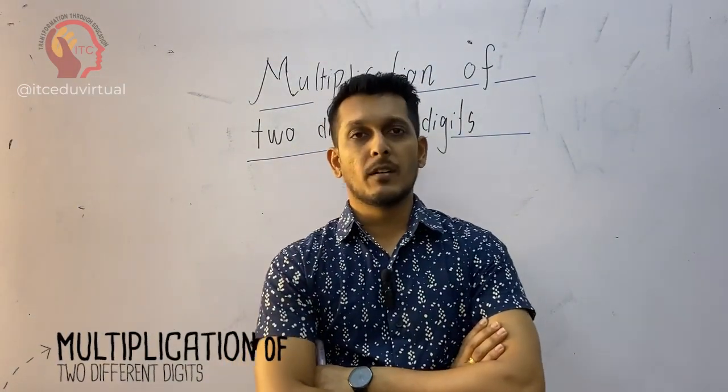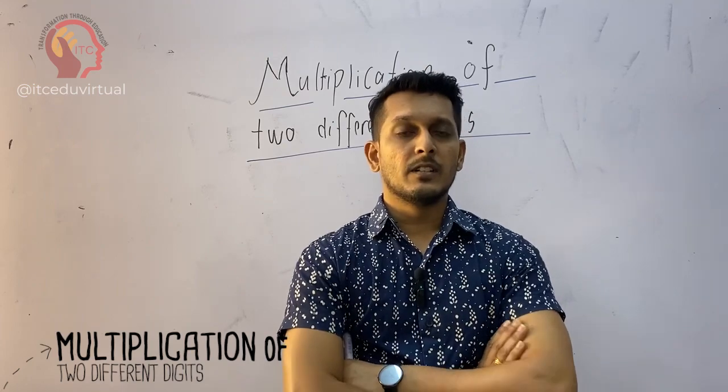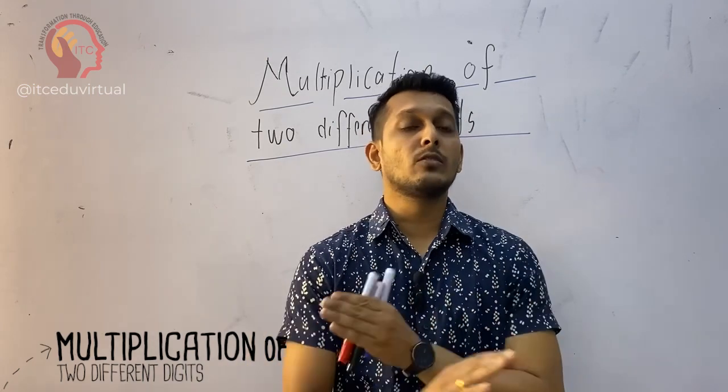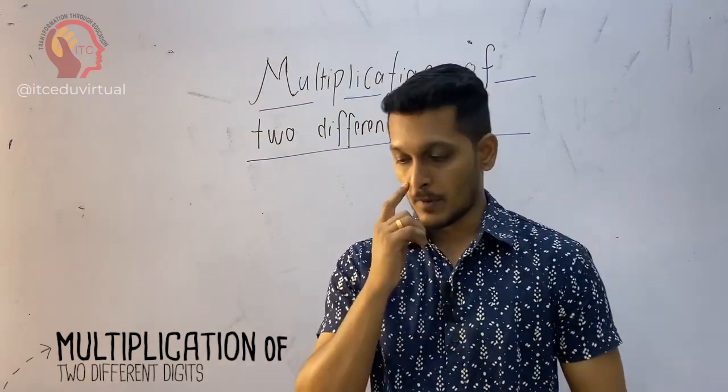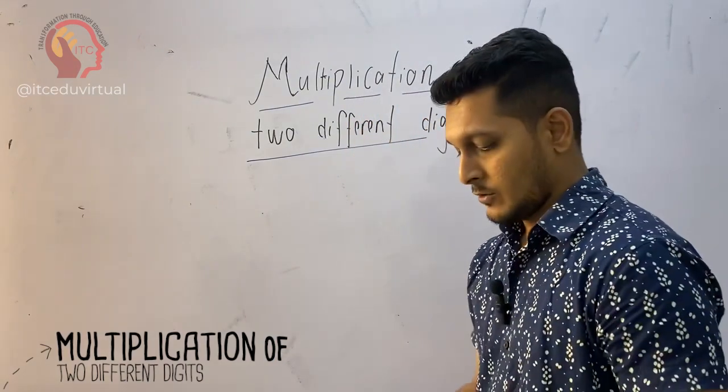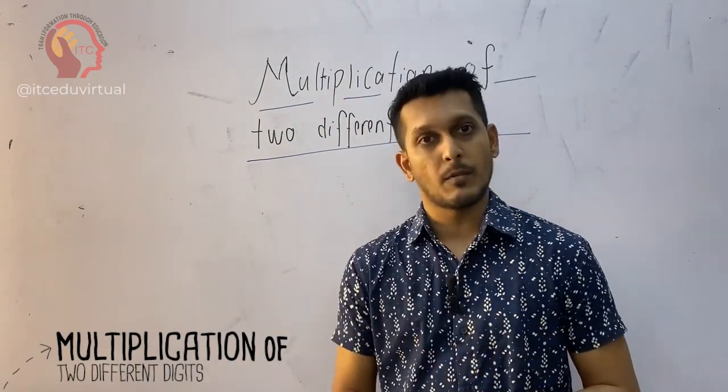Now we will see the multiplication of two different digits, the digits which are not related to each other. An example: 23 times 32. These are three different numbers.